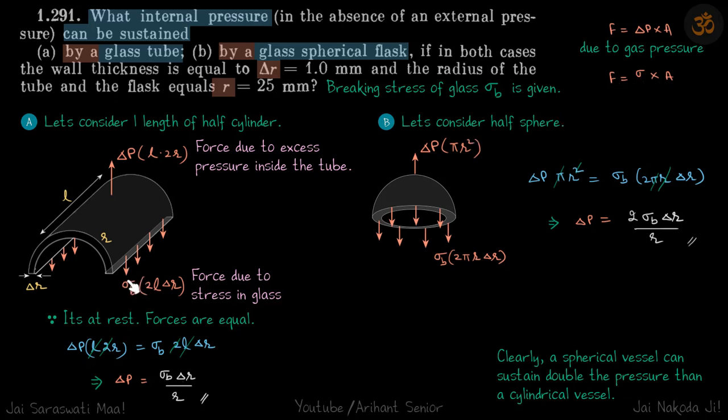Area will be of the cross section of the material, because stress is in the cross section of the material only. Thickness is delta r and length is L, so on this side it is L into delta r, and on this side also it is L into delta r. Net force due to stress in glass is sigma b into 2 times L into delta r.